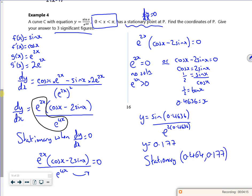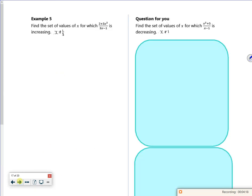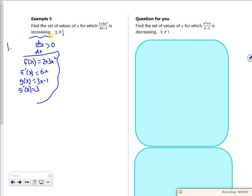So we know it's increasing when dy by dx is greater than zero. So let's have a look there. So f of x is 2 plus 3x squared. F dash of x is 6x. G of x is 3x minus 1. G dash of x is 3. So that's my little bit of error. So we've got some formulas.